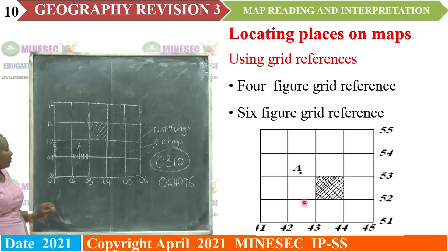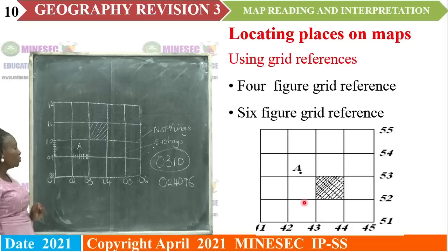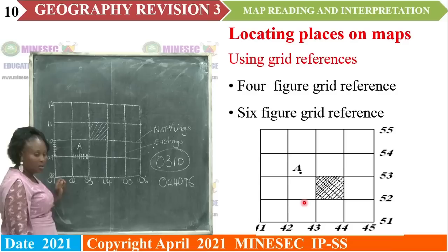The count gives us 6. To say that the specific location of A is 02, 4, 09, 6. That is how we get the six-figure grid reference.